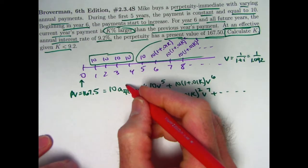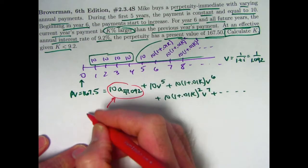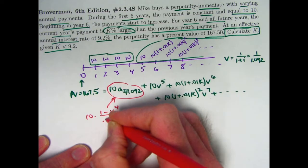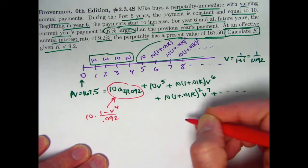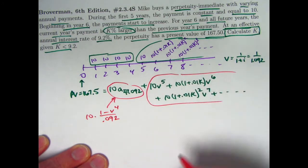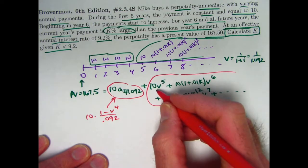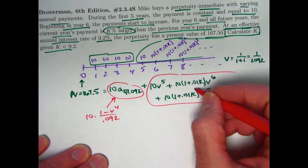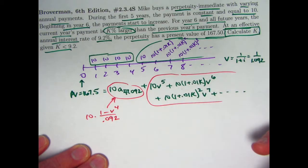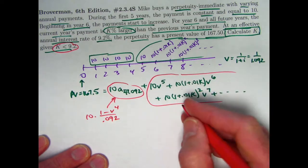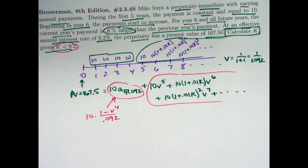This thing we can figure out with a formula. It's going to be ten times one minus v to the fourth over 0.092, where v again is this quantity right there. And this stuff right here is a geometric series with first term equal to ten v to the fifth, and common ratio equal to one plus 0.01k times v. Because of k being less than 9.2, that's what's going to guarantee that this series will converge to a finite number.